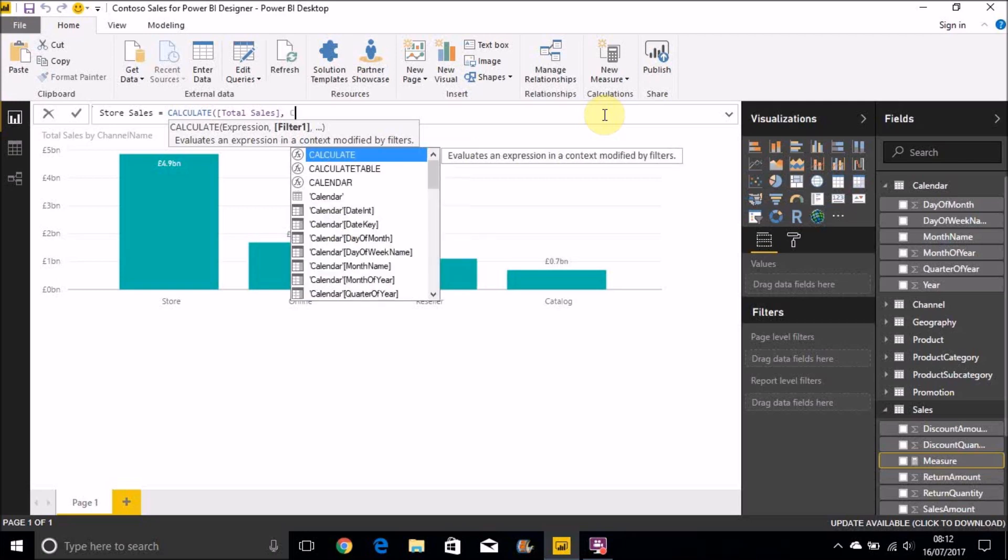And we're going to filter it by those that are for the Channel Name store. So let's set the table Channel, Channel Name, and this is where we apply a filter context. So what it's going to do is it's going to go away and it's going to iterate over that table, but it's only going to bring back values for Total Sales where the Channel Name of the related Channel table is equal to store.